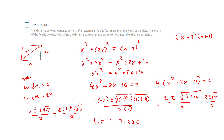That was the value of x — so x is approximately 3.236 feet. It wants the distance between opposite corners, which was x plus 4, so my answer is approximately 7.236 feet.